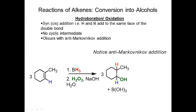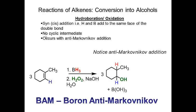Let's look at conversion of alkenes into alcohols. One reaction we've already looked at is hydroboration-oxidation. A couple of key things: first, the reaction is always syn, meaning H and OH always add to the same face. There's no intermediate. Third, this occurs with anti-Markovnikov addition — boron is anti-Markovnikov, meaning OH always goes to the less substituted carbon.